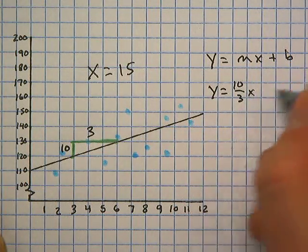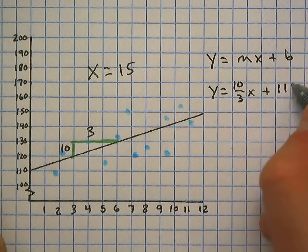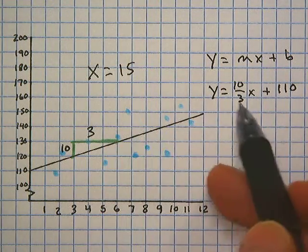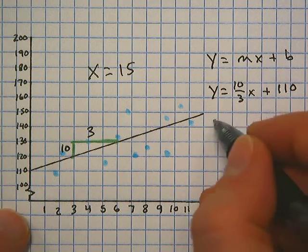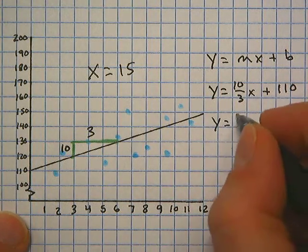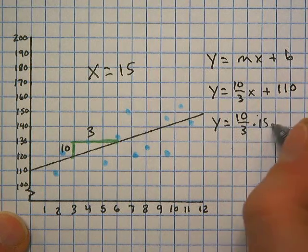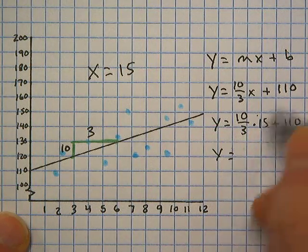So y equals 10 thirds x plus our y-intercept of 110. Now that we have the equation in slope-intercept form, it's as simple as plugging in our x value into our x variable and then solve it. So y equals 10 thirds times 15 plus 110 because 15 is our x value.